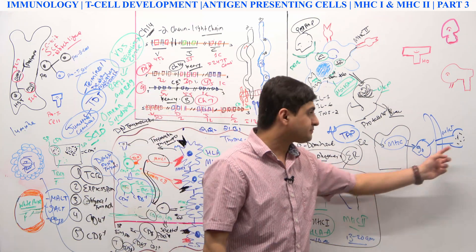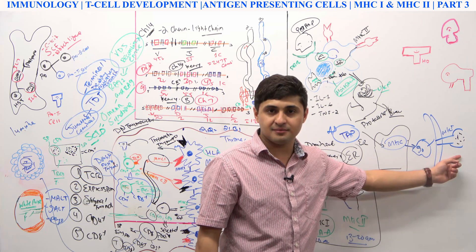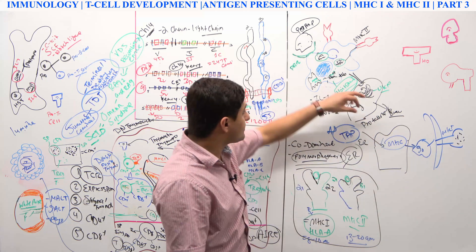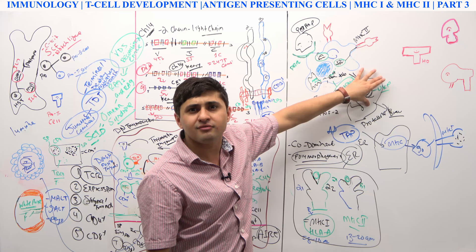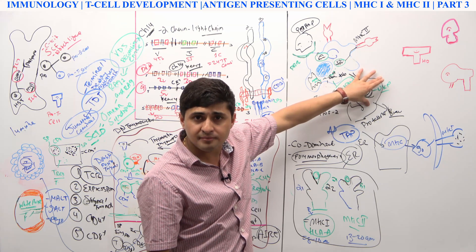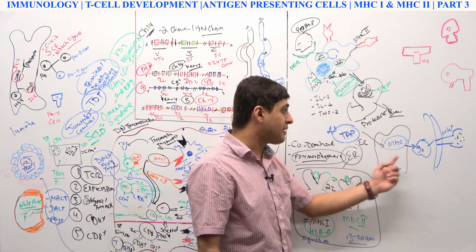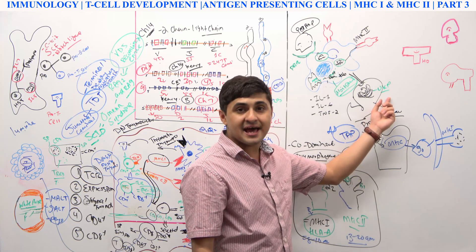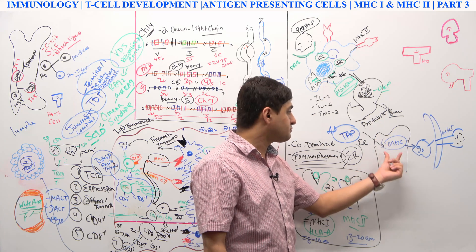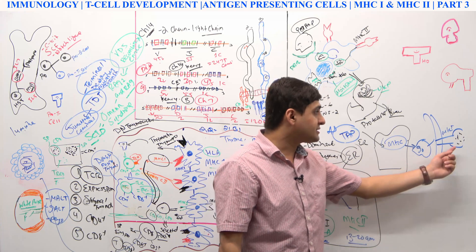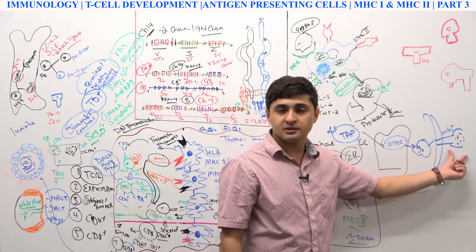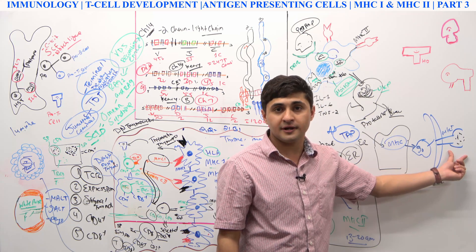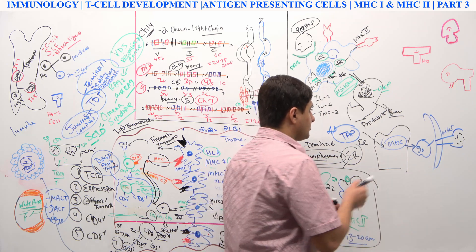This is how antigens get loaded onto MHC1. Viruses replicate inside cells and make viral proteins in the cytoplasm. Anything located in the cytoplasm follows this pathway — ubiquitin tagging, TAP protein transfer into the endoplasmic reticulum, and ultimately MHC1 picks up the antigen and shows it on the surface. This is called the endogenous pathway.